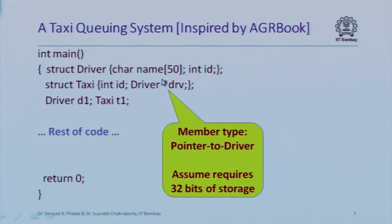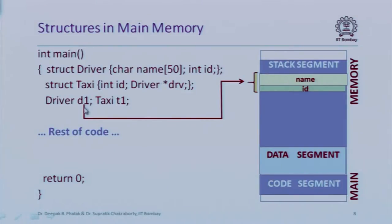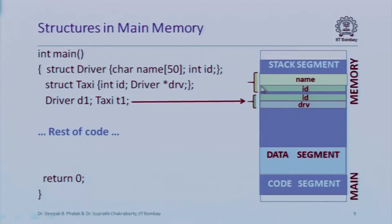A pointer is just an address in memory. If we assume 32-bit addresses, whether it's a pointer to integer, float, or driver, they all require just four bytes. So the taxi structure requires four bytes for id and four bytes for the driver pointer, totaling eight bytes. The driver structure needs 50 bytes for the name and four bytes for the id, for a total of 54 bytes. Both being local variables, space is allocated in the stack segment.